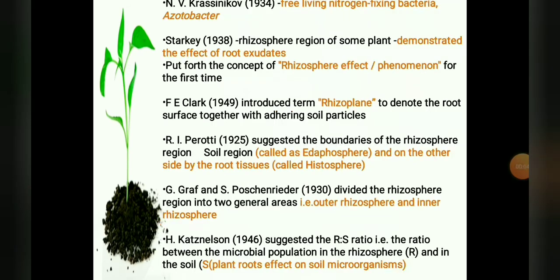In 1934, N. B. Krasnikov found that free-living nitrogen-fixing bacteria, i.e. Azotobacter, were unable to grow in the wheat rhizosphere.